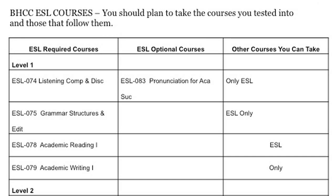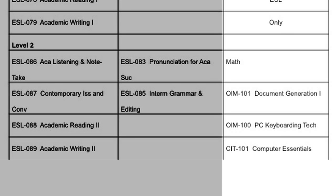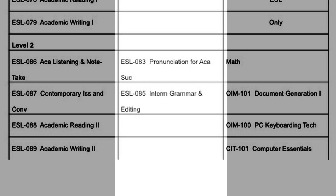When you're in ESL level one, you can only take ESL — you cannot take any other class. But in level two you can begin to take a math class. You can take OIM 101, OIM 100, and CIT 101 — those are three other courses you can take if you want to. There's also a pronunciation course in the optional column; you can take it in level one, two, or three, but you don't have to. There are also optional grammar courses in level two and three.